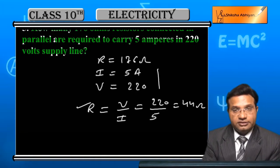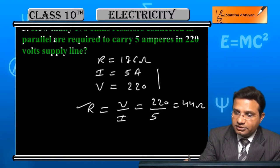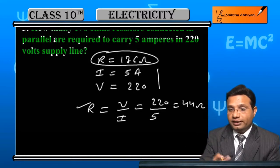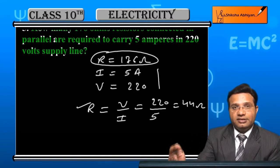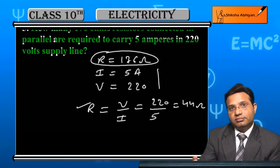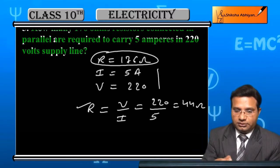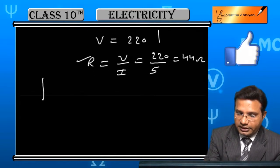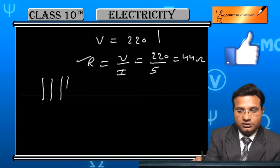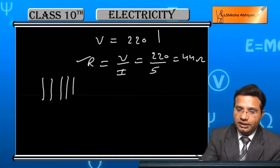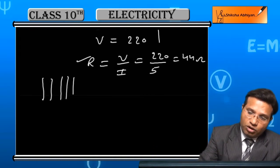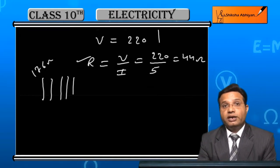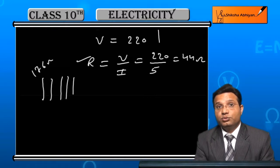This is the resistance of the entire circuit and this is the resistance of the resistor and we are required to find means we have to take as many as these resistors and we are required to find the number of resistors means we will take one resistor, second resistor, third resistor, fourth resistor means many resistors in parallel. All will be having 176 ohm resistance. We are required to find how many resistors we will be using.